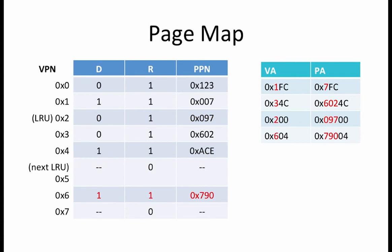Finally, we need to perform the store to virtual address 0x604, which is in VPN 6. Since VPN 6 is resident in physical memory, we can access it at physical page 0x790 as shown in the page map. The virtual address 0x604 maps to physical address 0x79004. Note that because the dirty bit of VPN 6 was already 1, we don't need to make any further modifications to the page map. If the dirty bit had been 0, then we would have set it to 1. So the 5 physical pages accessed by this program are page 0x7, page 0 for the page faults, page 0x602, page 0x097, and page 0x790.